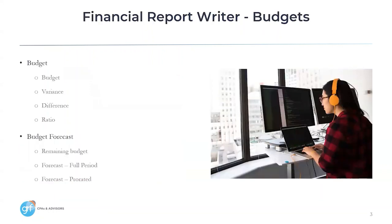A quick dive into the different options you have related to budgets for your reporting columns: Budget, like actuals, will provide the values of the budget selected from the budget repository. Variance provides the variance between two scenarios shown as a percentage. Difference provides the difference between actuals minus budget or budget minus actuals. And Ratio provides the ratio of the budget compared to the actuals.